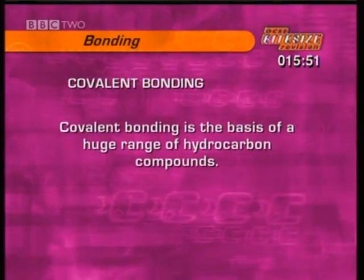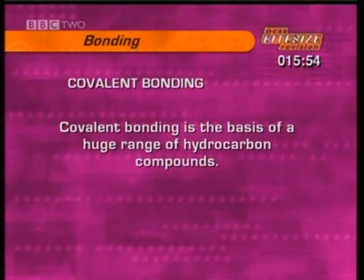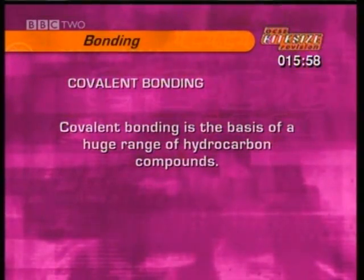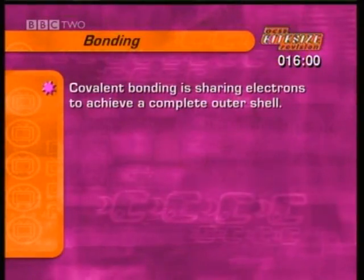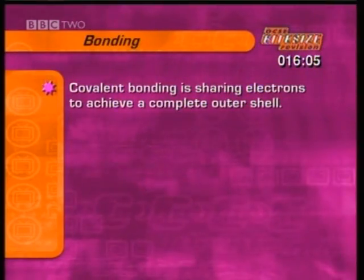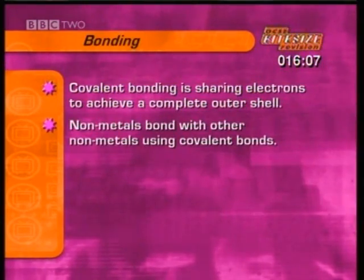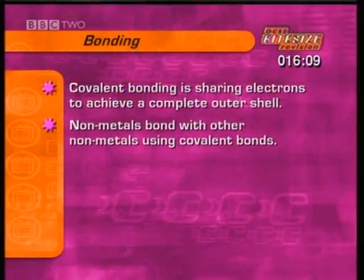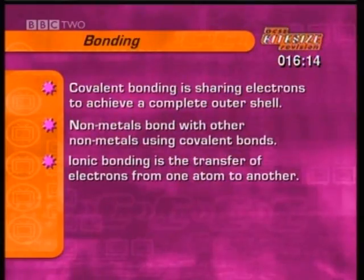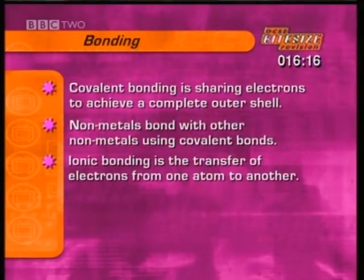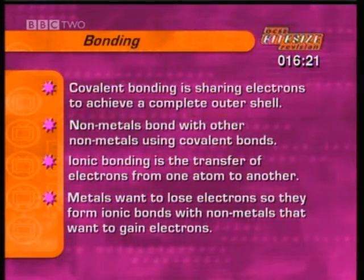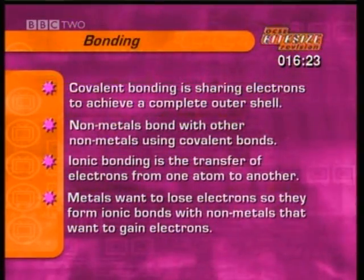In the clip, we saw how methane is made, but covalent bonding is the basis of a huge range of hydrocarbon compounds. Covalent bonding is the sharing of electrons between atoms, so they all achieve a complete outer shell. Non-metals bond with other non-metals using covalent bonds. Ionic bonding is the transfer of electrons from one atom to another — metals want to lose electrons, so they form ions and ionic bonds with non-metals that want to gain electrons.